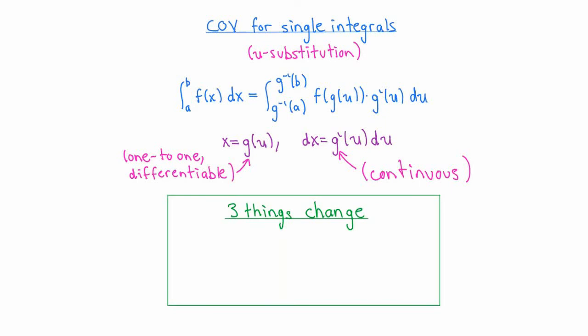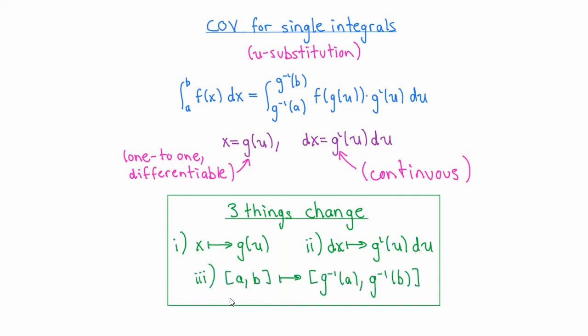One way to understand what's going on here is to notice that when we make a substitution of this form, there are three things that change. First, x gets replaced by g of u. Secondly, the differential dx gets replaced by g prime of u du. And finally, the interval of integration from a to b gets replaced by the interval from g inverse of a to g inverse of b. Let's try to understand the reasons behind these changes, especially behind number two, as we're going to see an exact analogy with multiple integrals.